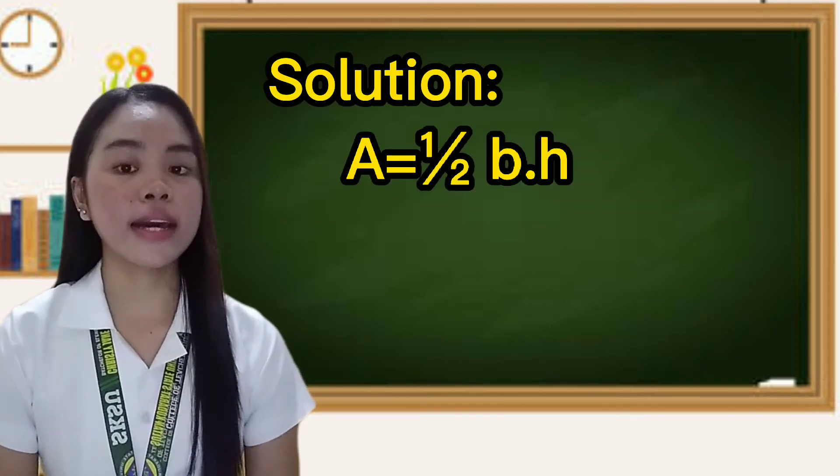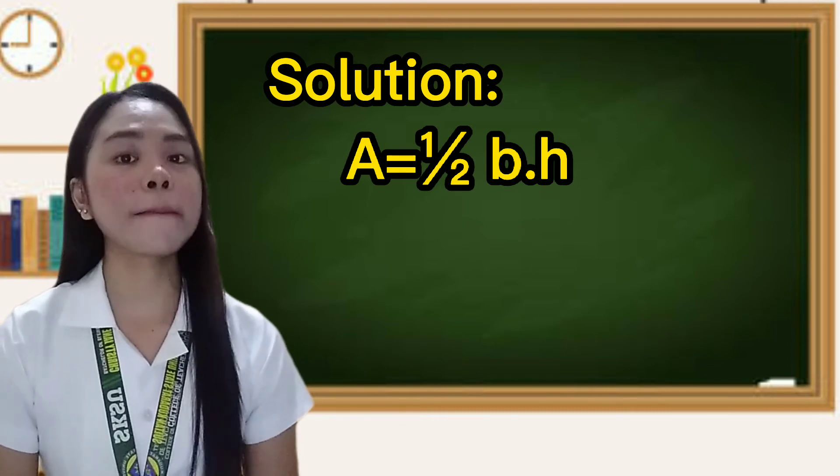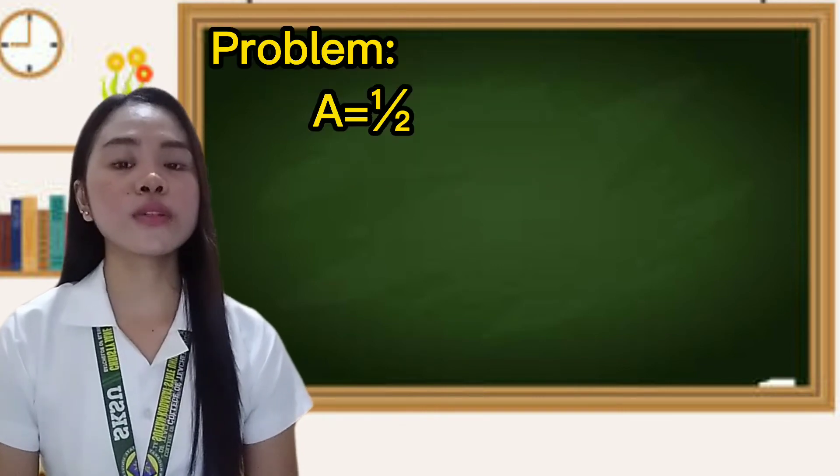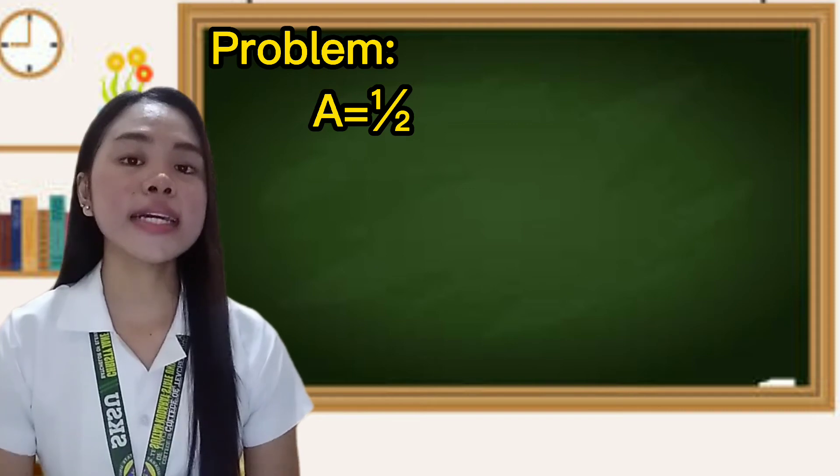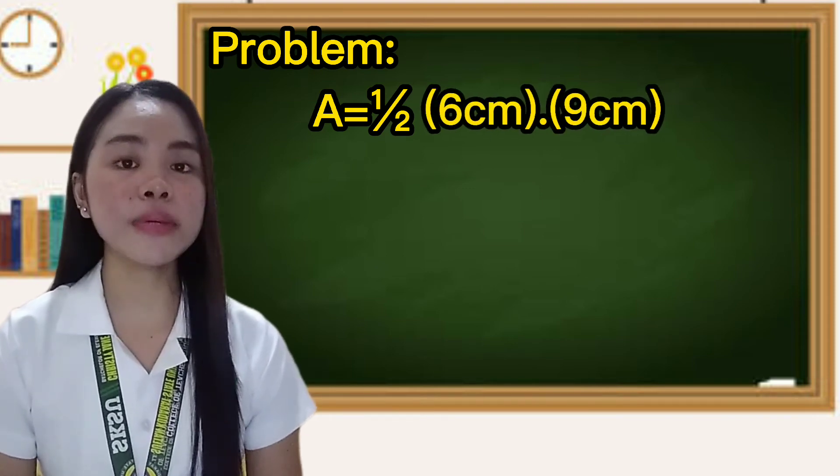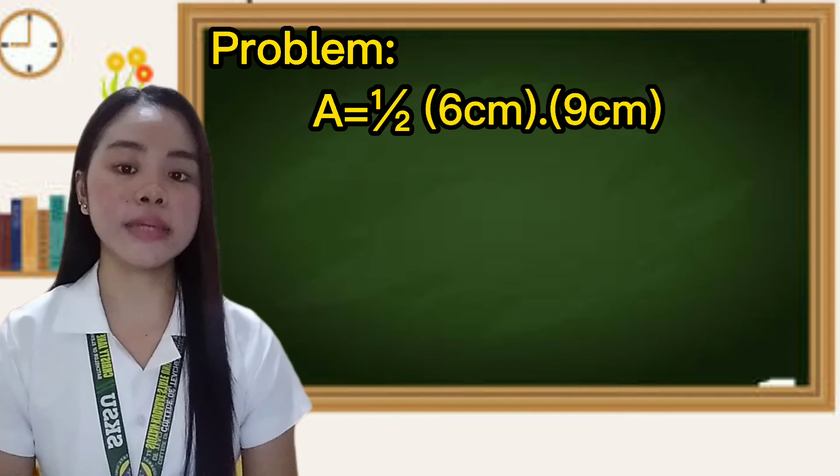Our solution: area equals one-half B times height. So, the problem is A equals one-half six centimeters times nine centimeters.